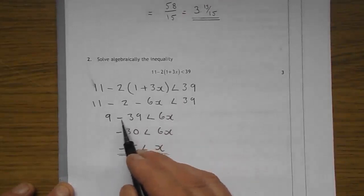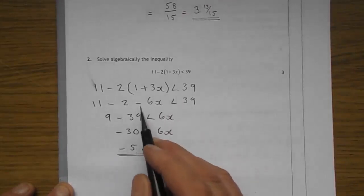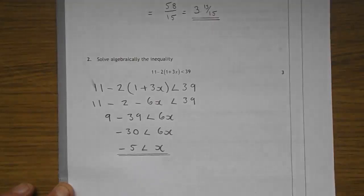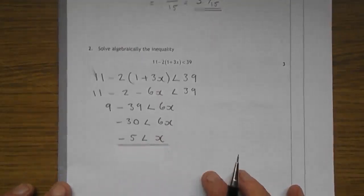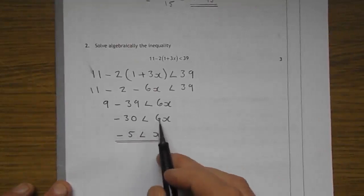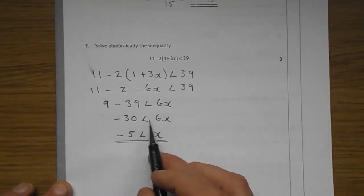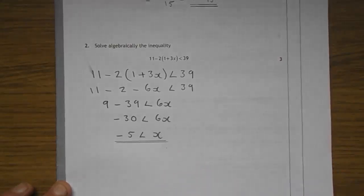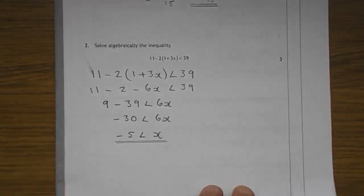So it's eleven take away two lots of one, two. Take away two lots of plus three x. Take away six x less than 39. Eleven take two gives the nine. And what I've just decided to cut a few parts of one stone. That 39 has come over to become minus 39. Minus six x over to become six x. Nine take 39, minus 30. Six x there. And dividing both sides by six means that you don't change the direction of that. Minus 30 divided by six is five. Five is less than x would be your final answer.